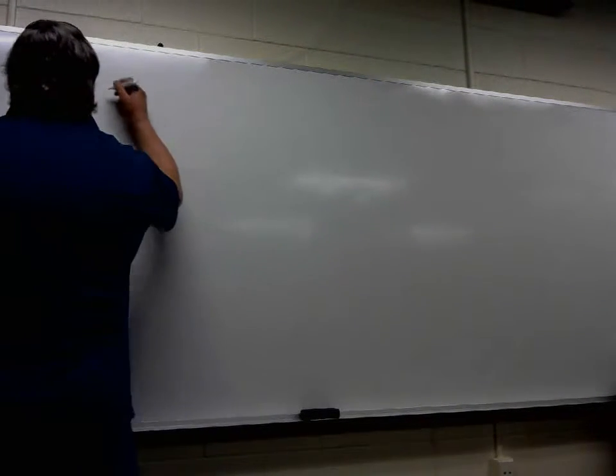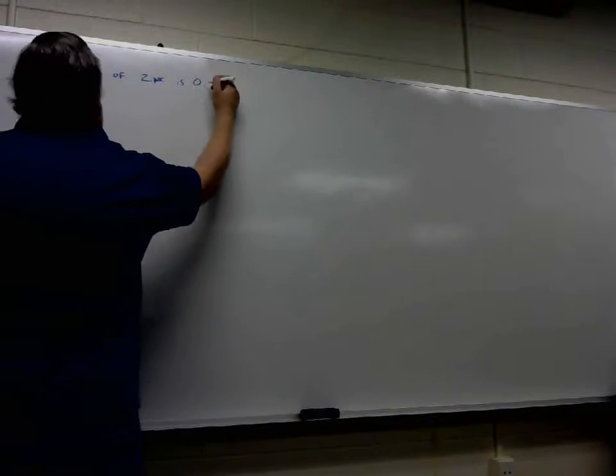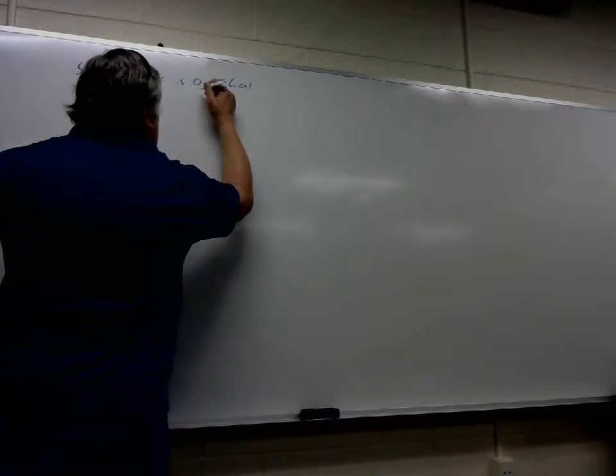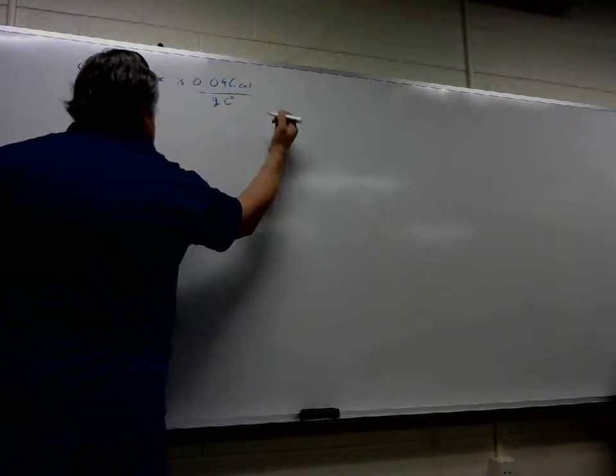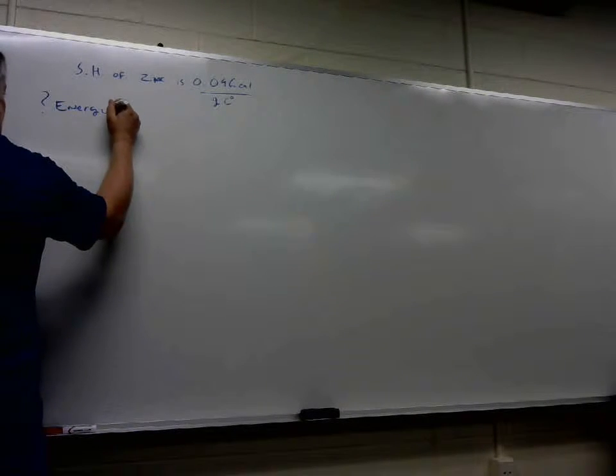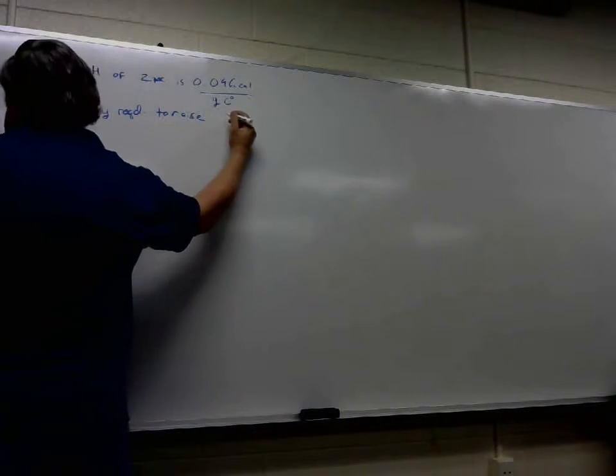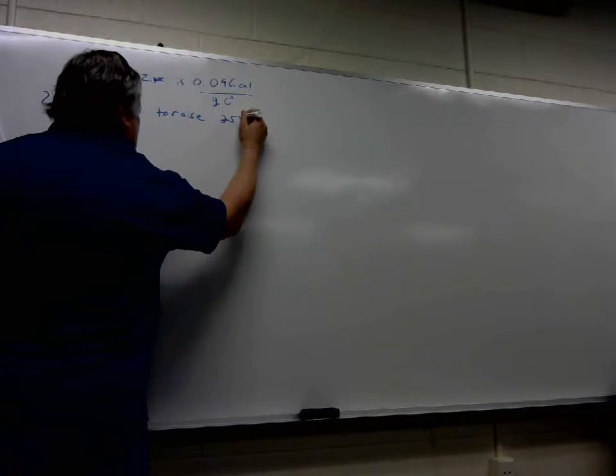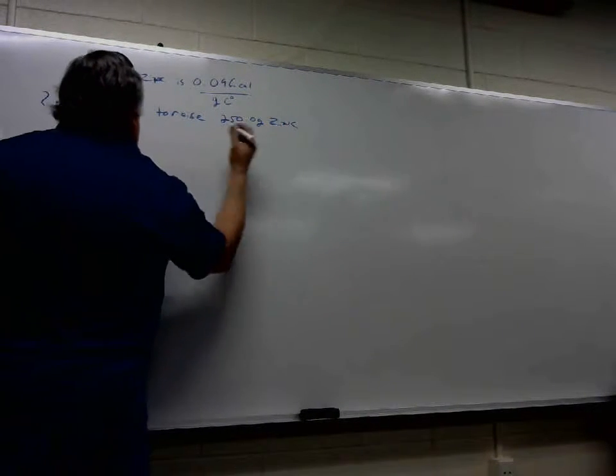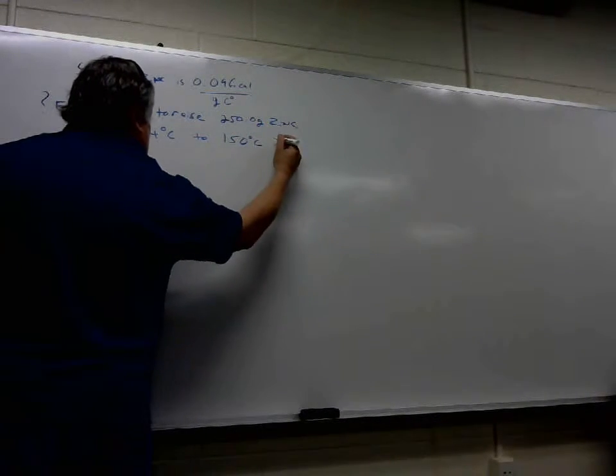Okay, so the question is a specific heat question. The specific heat of zinc is 0.096 calories per gram per degree Celsius. I'll explain that in a minute. The question asks how much energy, which is calories, is required to raise 250.0 grams of zinc from 24 degrees Celsius to 150 degrees Celsius.